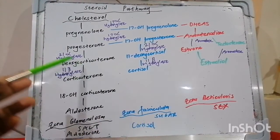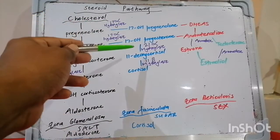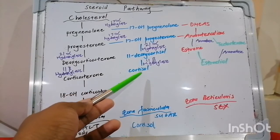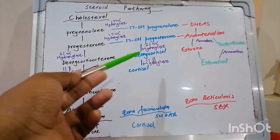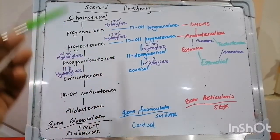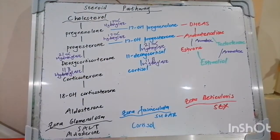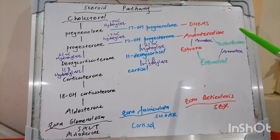In the zona fasciculata, concerned with cortisol, pregnenolone becomes 17-hydroxypregnenolone via 17-alpha hydroxylase, and progesterone becomes 17-hydroxyprogesterone also via 17-alpha hydroxylase. Thereafter, 17-hydroxyprogesterone becomes 11-deoxycortisol and then cortisol via the actions of 21-alpha hydroxylase and 11-beta hydroxylase. Then 17-hydroxypregnenolone becomes dehydroepiandrosterone (DHEA) and 17-hydroxyprogesterone becomes androstenedione. Peripherally, the enzyme aromatase converts androstenedione to estrone and testosterone down to estradiol — that is the function of aromatase.